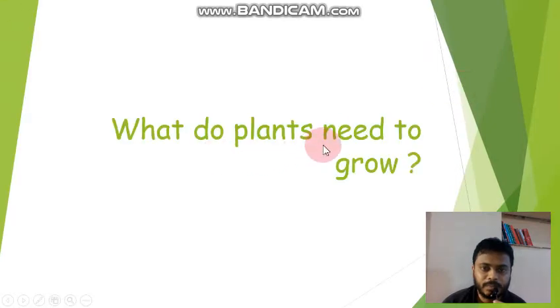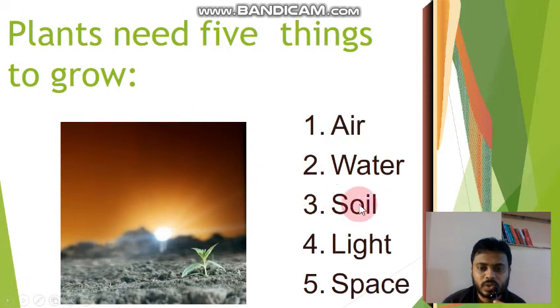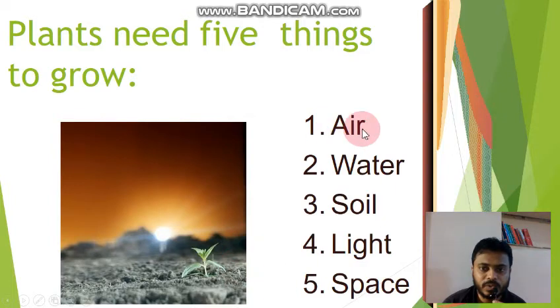What do plants need to grow? Plants need five things to grow: air, water, soil, light, and space. These five things plants need to grow.